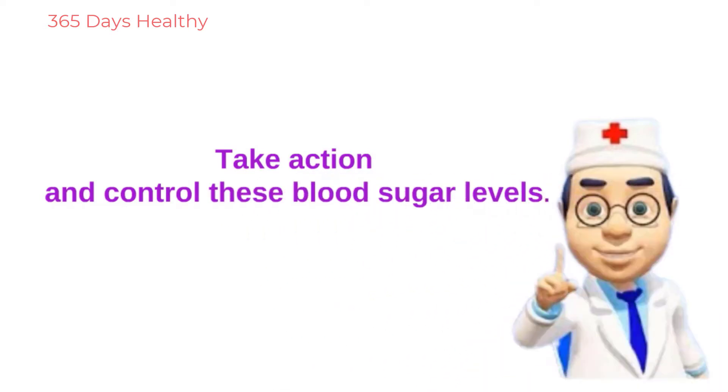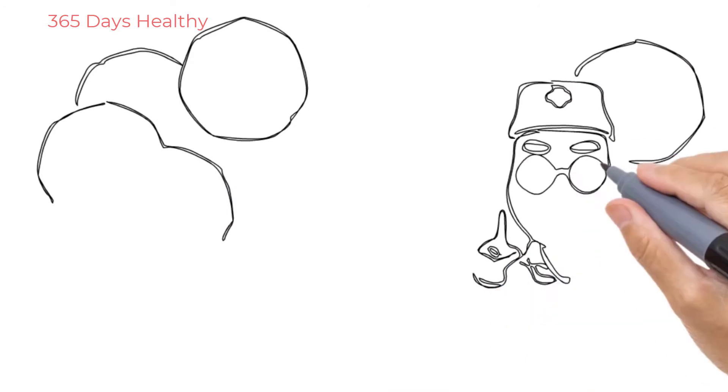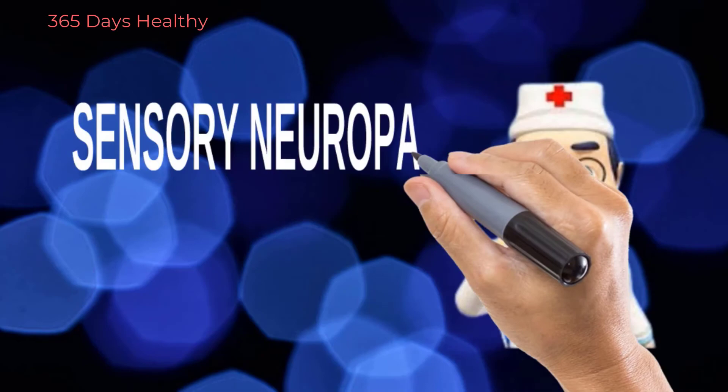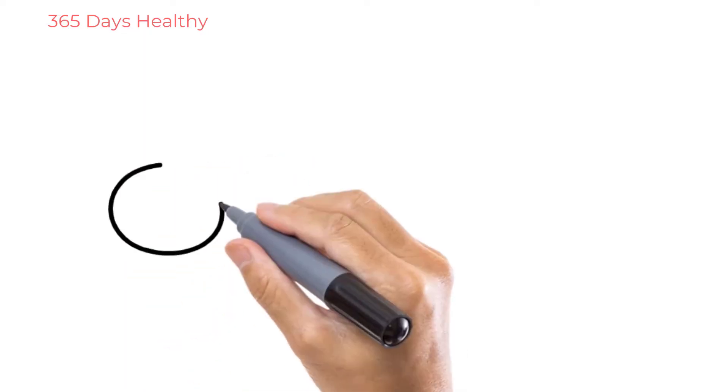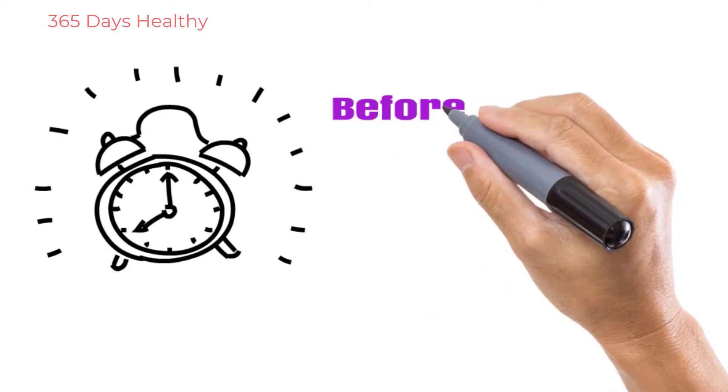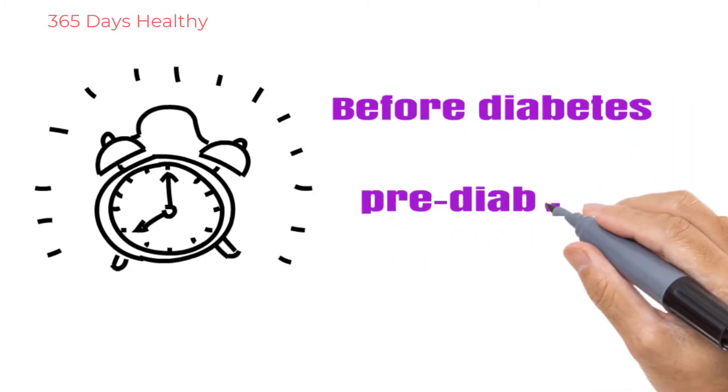So now let's get started. Sensory neuropathy is the most common because it occurs earliest. Sometimes it actually happens even before diabetes develops, even in the pre-diabetes stage. Some people manifest with diabetic neuropathy sensation.